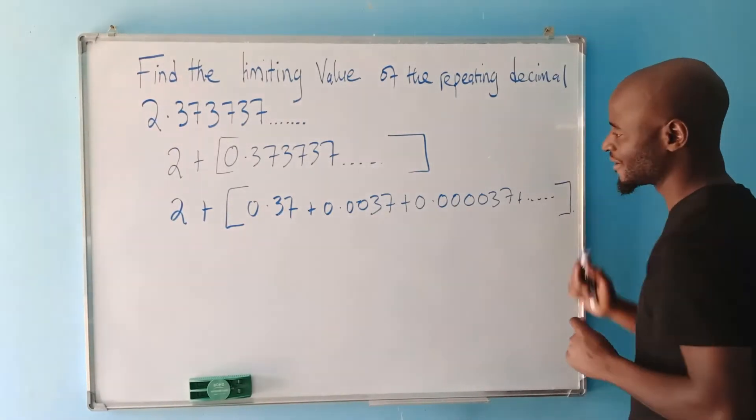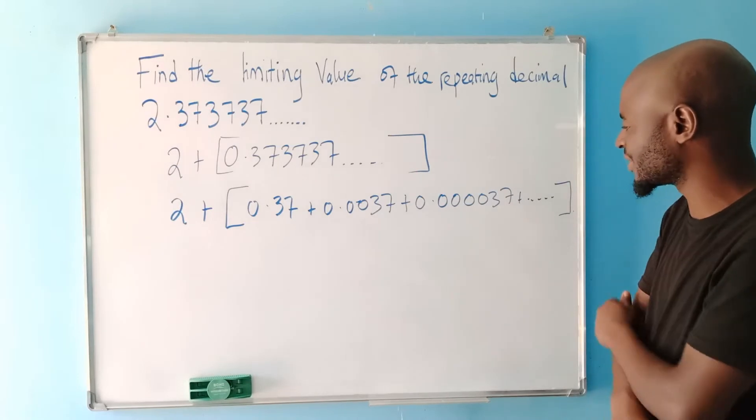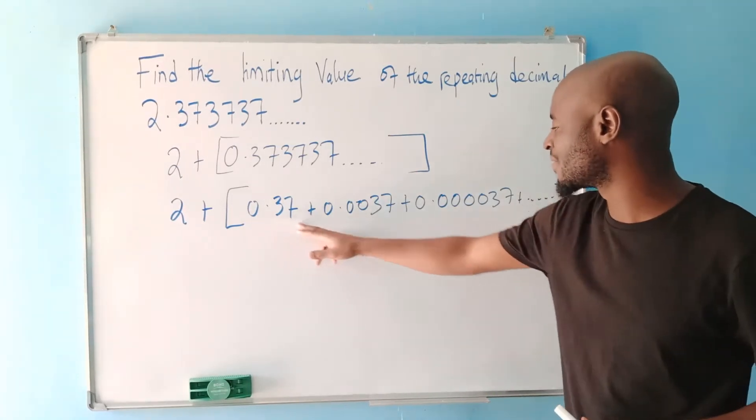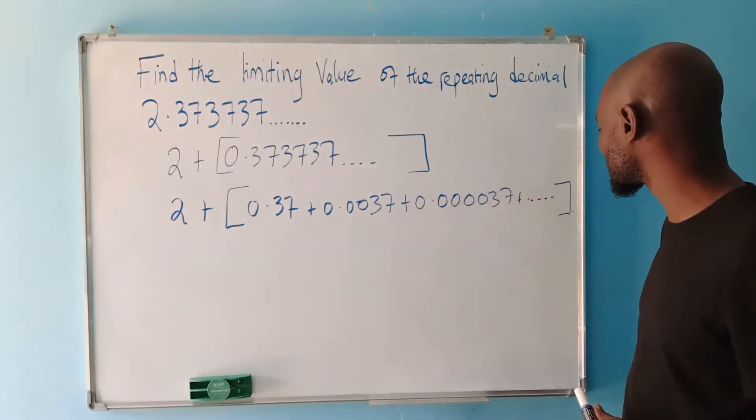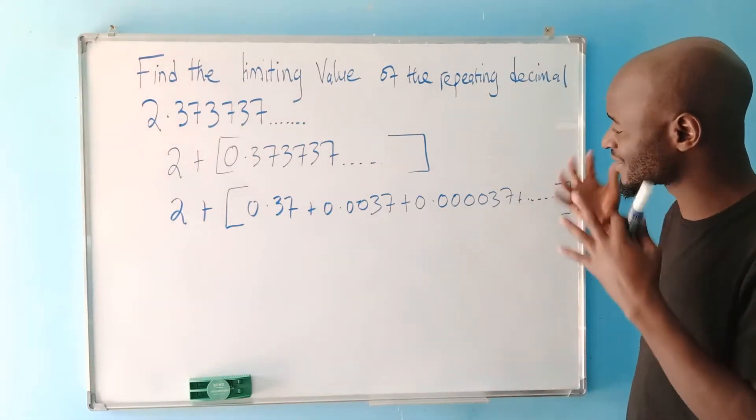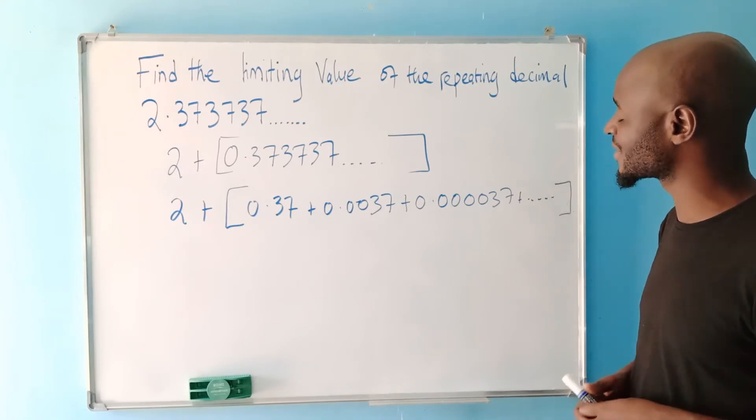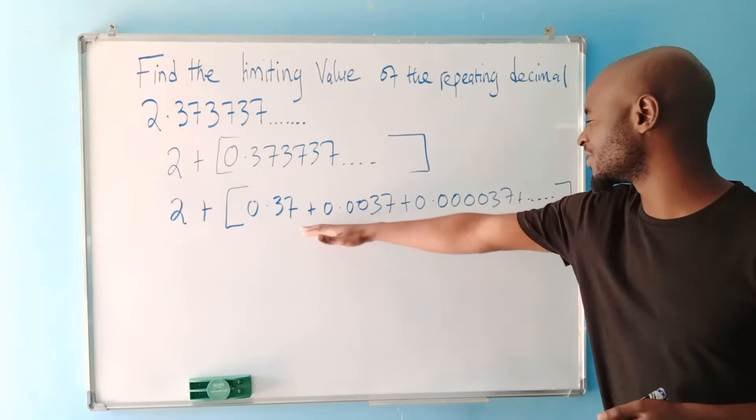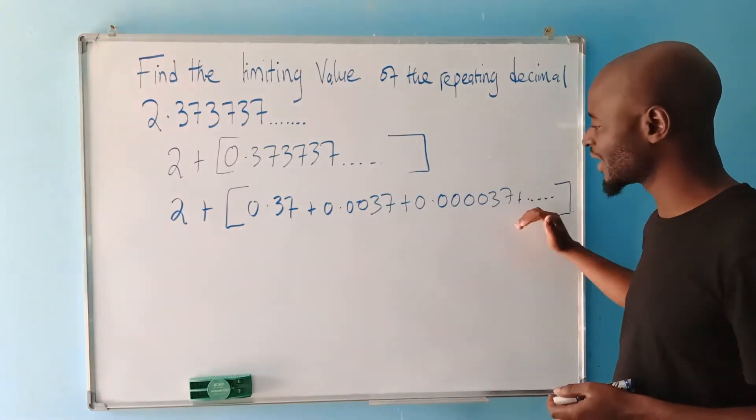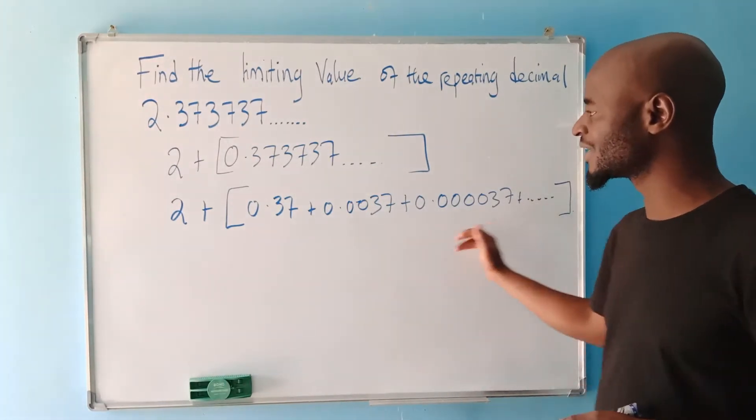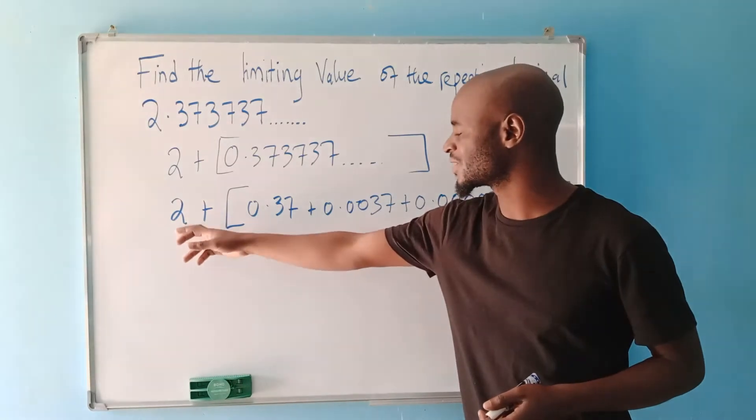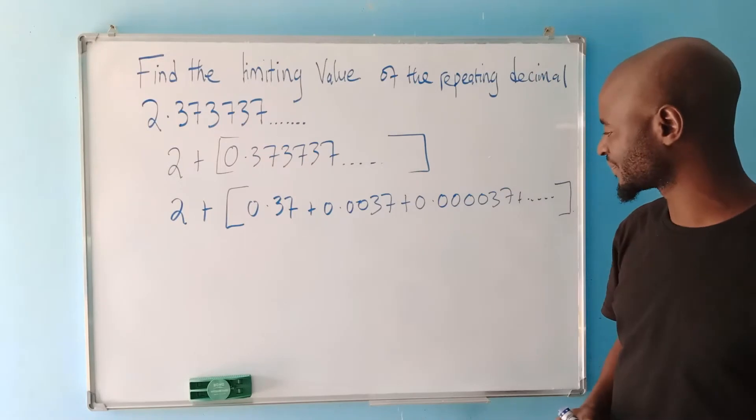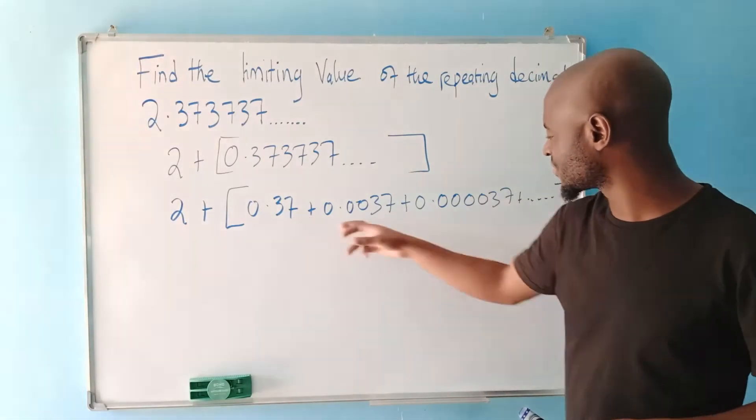Now when you look at this GP, this GP converges. In other words, these will have a limiting value as we continue to add the terms. As the number of terms increases, as we increase the terms such that we end up going to infinity, these will have a limiting value. So we have to find that limiting value. Then we add it to 2. Once we add it to 2, it will be the limiting value for repeating this. So this is a GP.